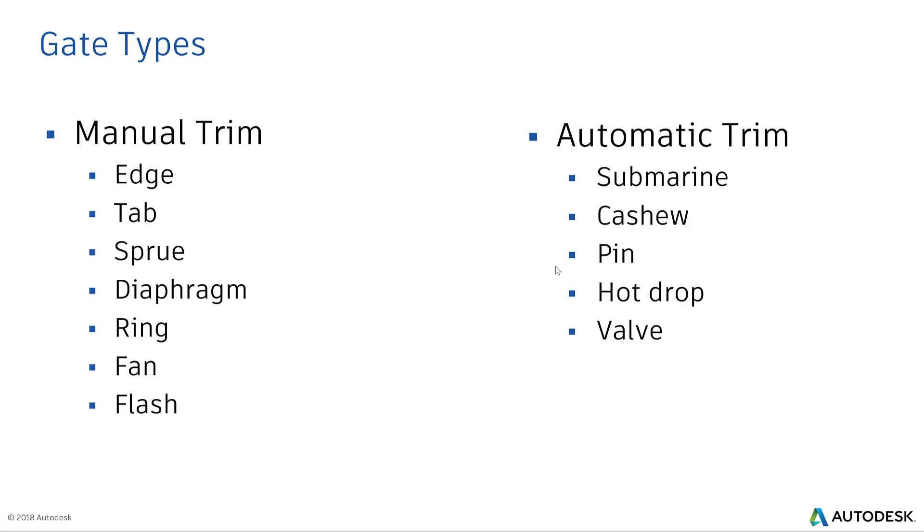Before I get started on the best practices, I want to give an overview on types of gates that are commonly used in the industry. Manual trim gates and automatic trim gates are the two main categories. Manual gates are very common, particularly types like edge gate, tab gate, sprue gate, diaphragm gate, ring gate, fan gate, and flash gates.